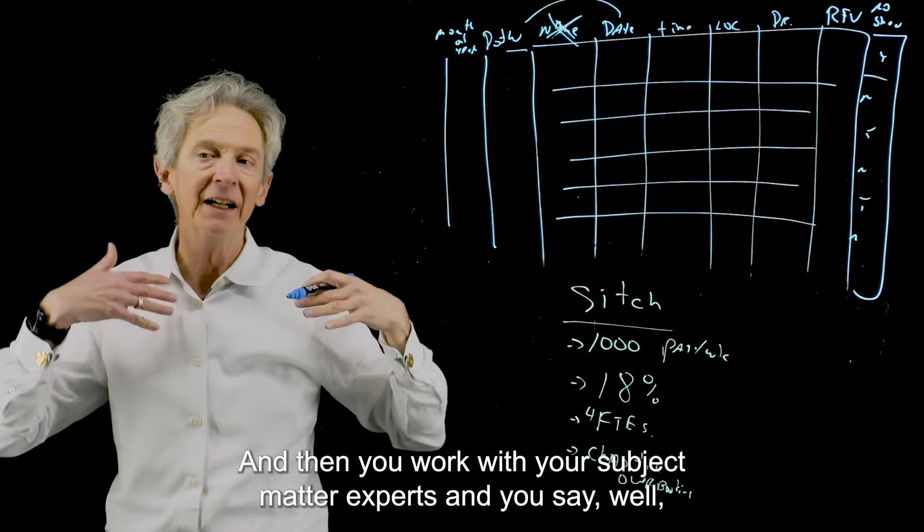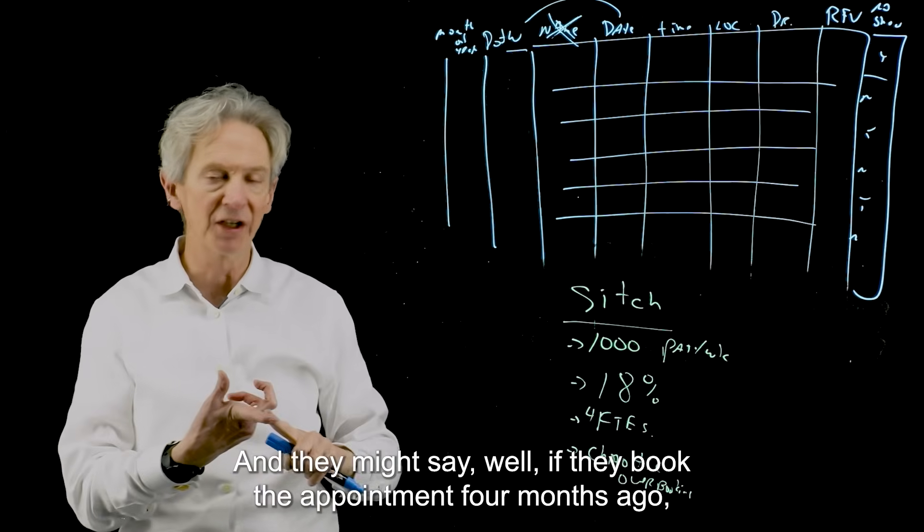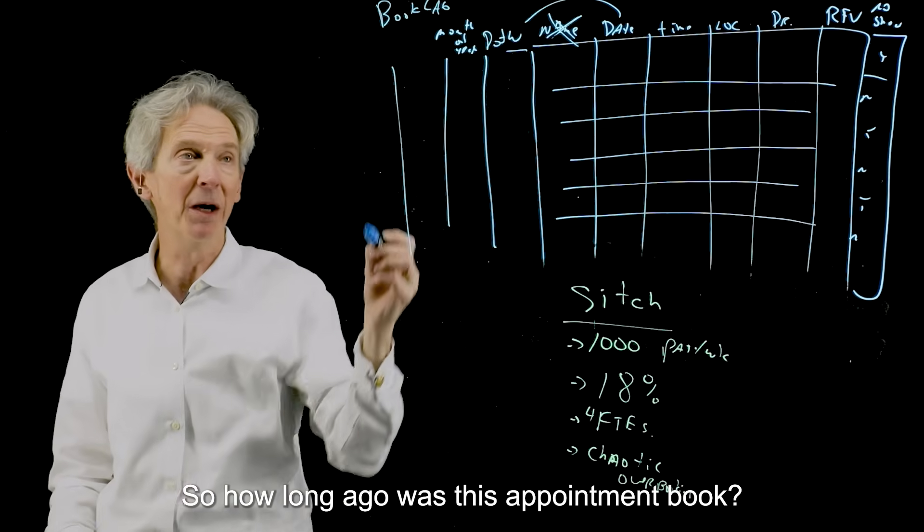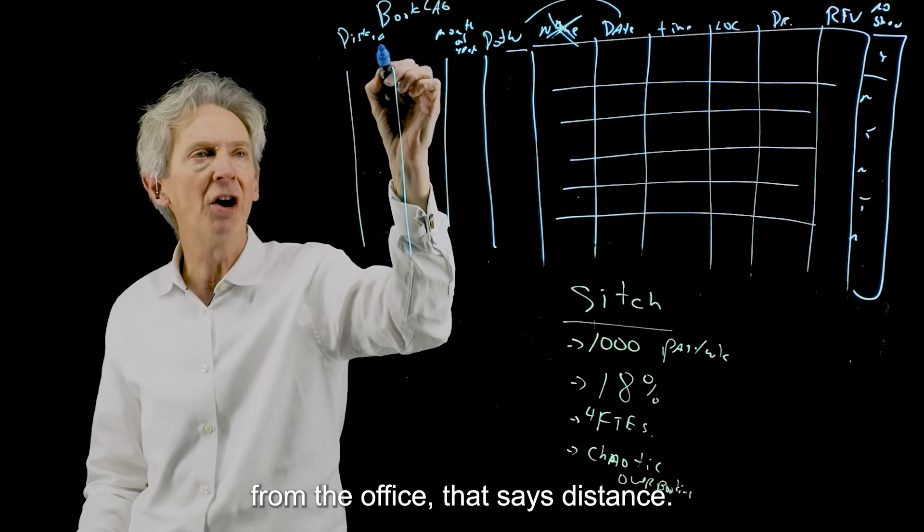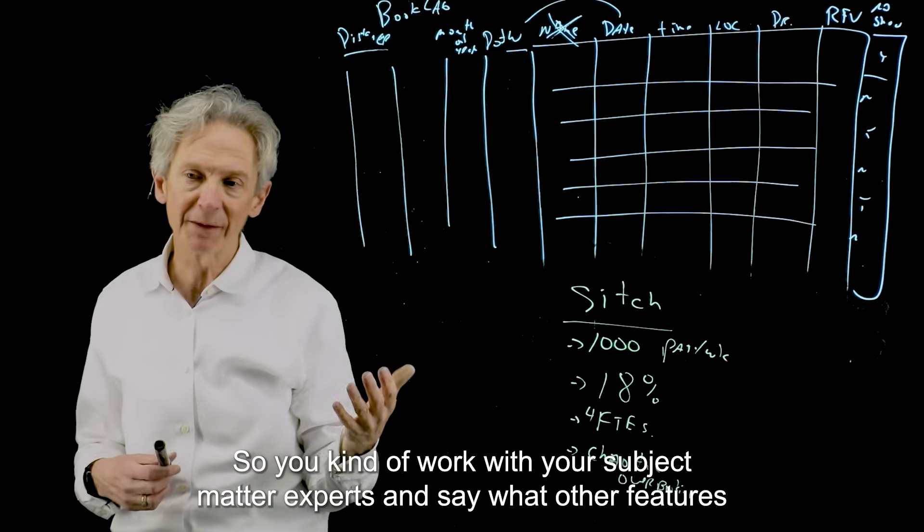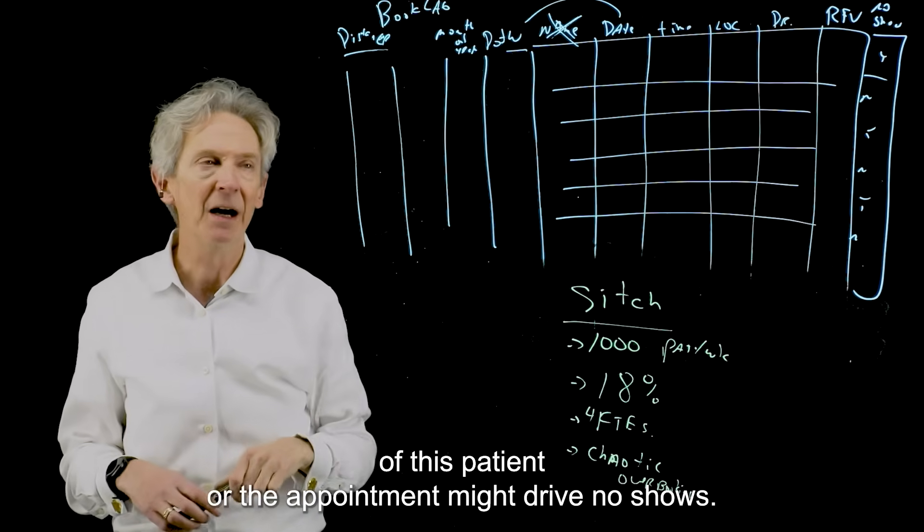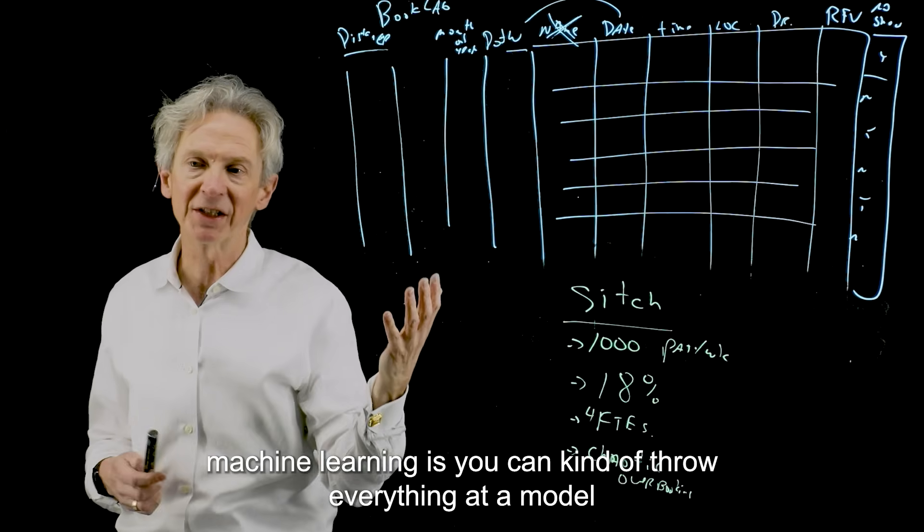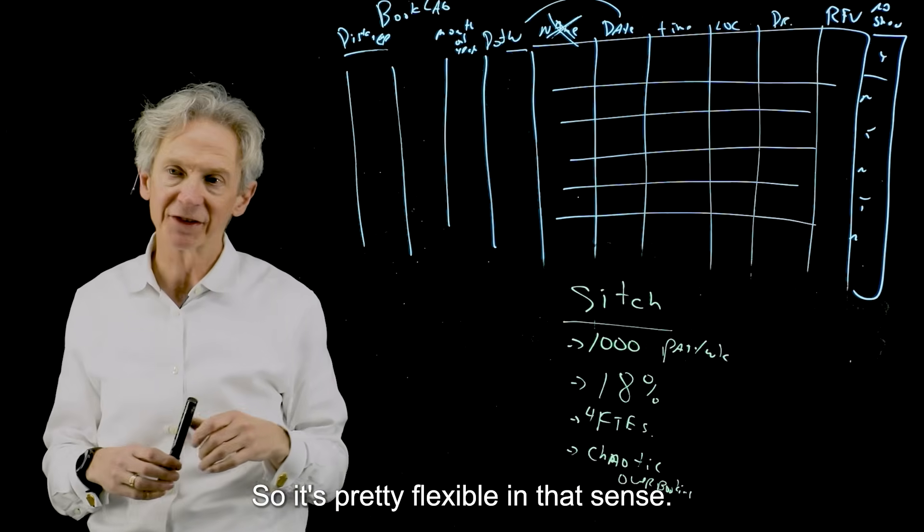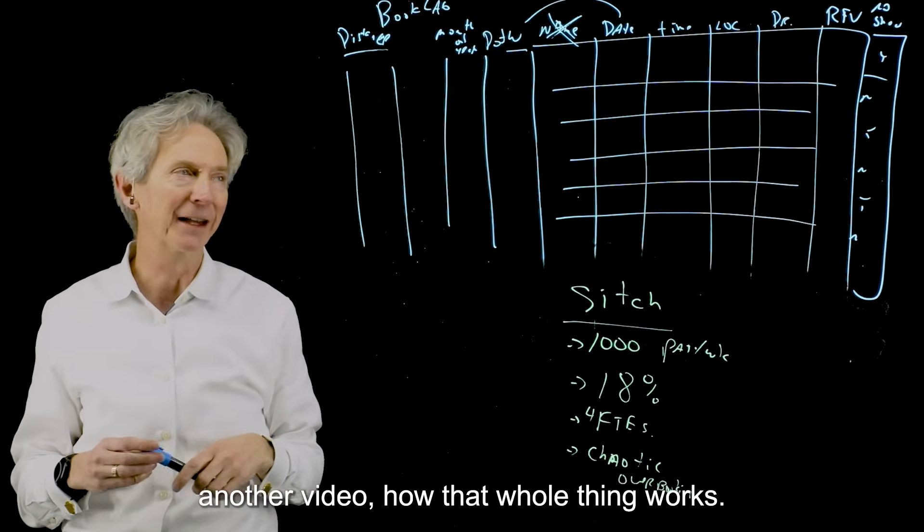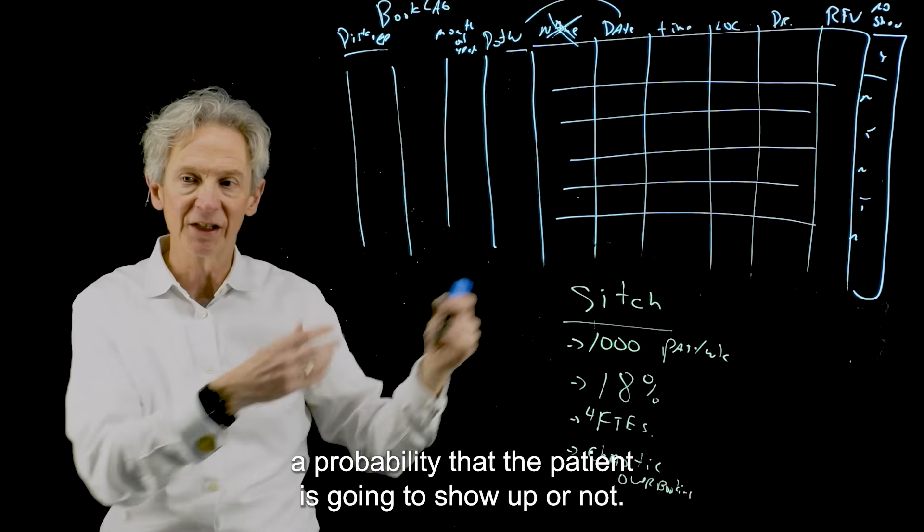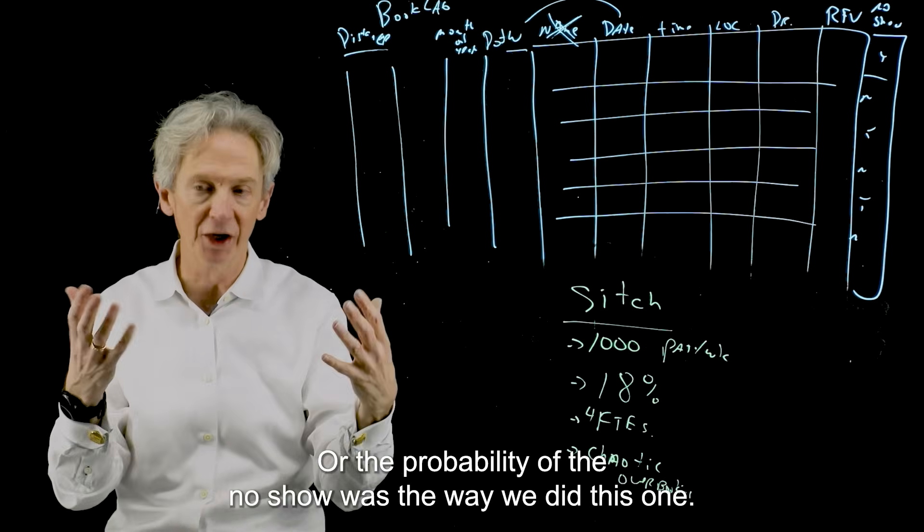So there's that sort of thing. And then you work with your subject matter experts and you say, well, what patterns do you see? And they might say, well, if they booked the appointment four months ago, then they're less likely to show up than if they booked it yesterday. So you add a column, you might call it book lag. So how long ago was this appointment booked? Or people that live a long way from the office, that says distance, people that live a long way from the office aren't going to show, have more difficulty making their appointments. So you work with your subject matter experts to say, what other features of this patient or the appointment might drive no shows? And the nice thing about machine learning is you can kind of throw everything at a model and it will just weight down the things that don't matter. So it's pretty flexible in that sense. So that's how the, and then the model is trained and I can describe that in another video, how that whole thing works. And then you have a pattern function that can take features of future appointments like these and generate a probability that the patient is going to show up or not. Or the probability of the no show was the way we did this one.